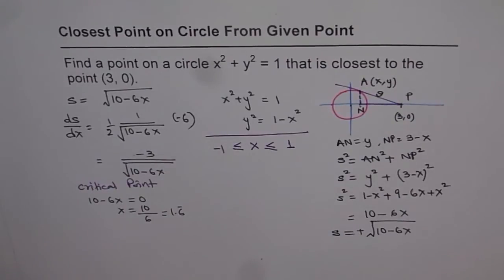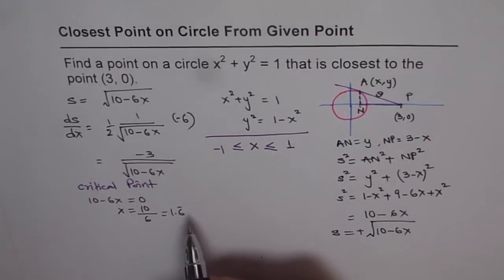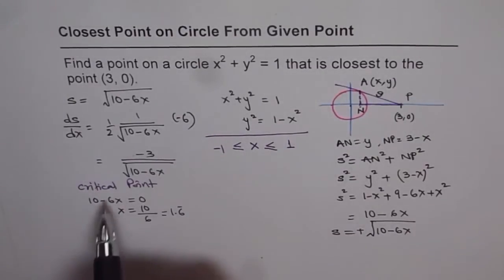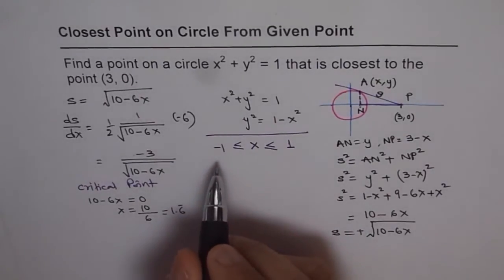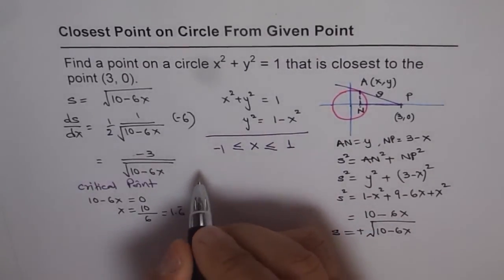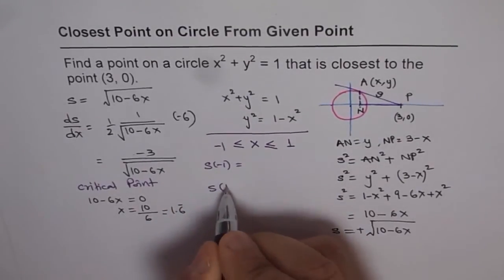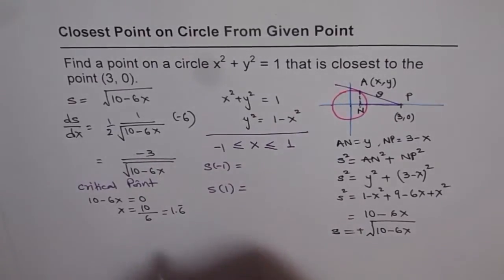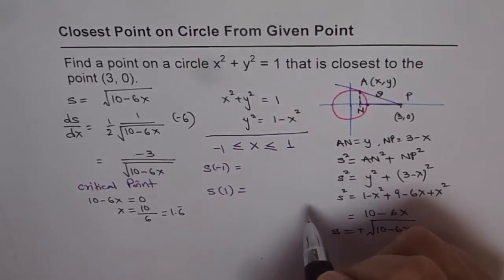So let's consider these two points. That means we will go back to the basics. When we have a boundary condition, a maximum or minimum absolute value exists at these points and at the critical point. Critical point is not working out for us. So let's try out the value of s, the distance, at these points. We will plug in s equals minus 1 and get the value, and we will plug in s equals 1 and get the value. Obviously you can see if I put s equals to 1 I do get the closest point.